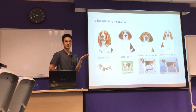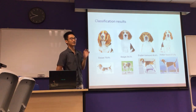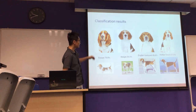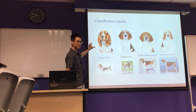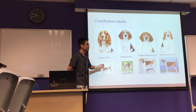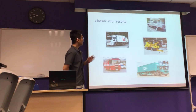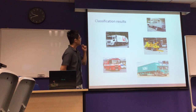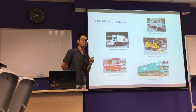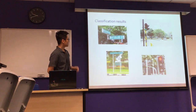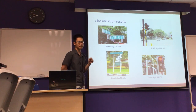This is like reverse Google — previously we input the breed and see how it looks, but now we have an image and the model tells us the breed. For example, the Basset Hound dog has very unique features, so the model is very confident in classifying it. For vehicles photographed in Singapore, the model has no problem identifying them, and it can also identify street signs and traffic lights pretty well.